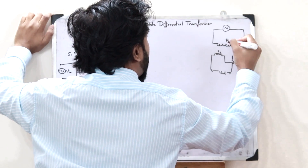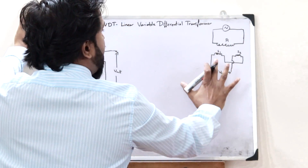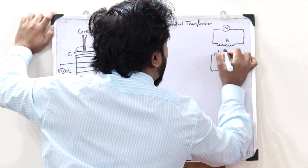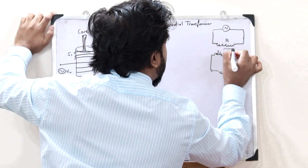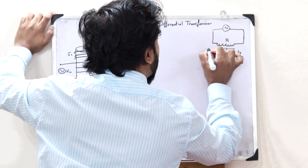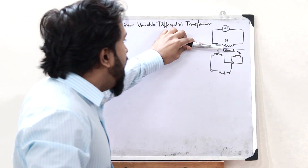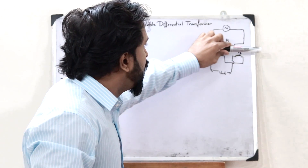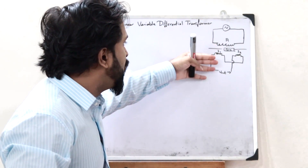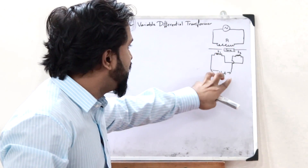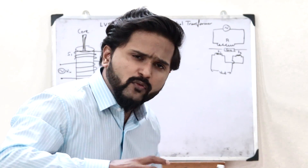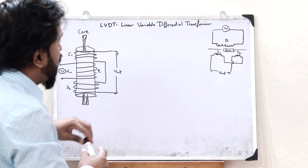This is the primary winding P1 and these are the secondary windings. A core is placed inside here. As the core moves inside, we have to get an output electrical signal. How is that? Well, let's find out.